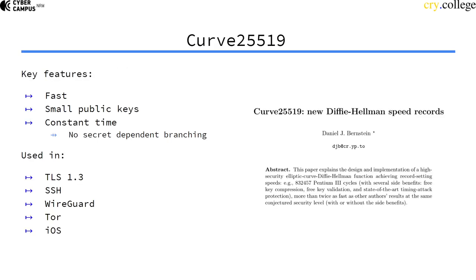The key features of Curve 25519 are that it's really fast, it has very small public keys due to point compression, and it runs in constant time — so there's no branching done dependent on secret information, which was a problem with double-and-add.